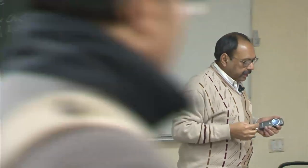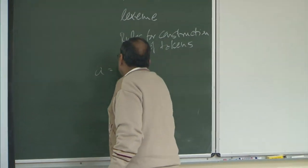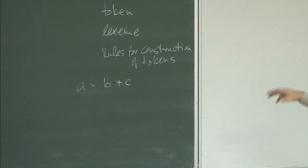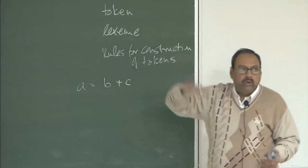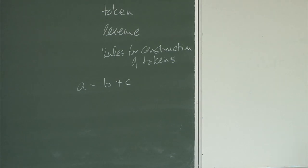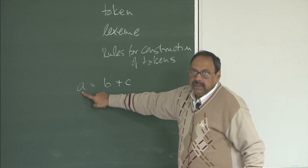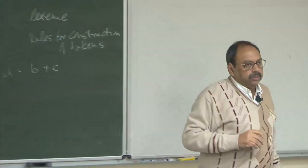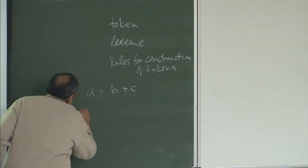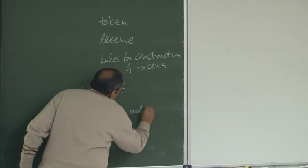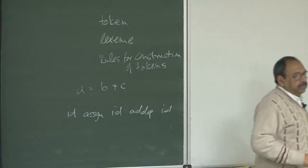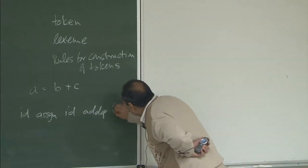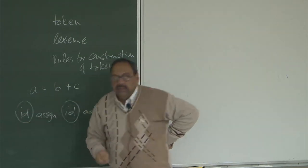Let me introduce these terms by an example. Suppose I write an expression and I am trying to tokenize it — to compile this particular expression. I am just focusing on this one, and typically what I will be doing is passing on information like saying there is an identifier, there is another identifier, there is another identifier, this is an assignment operator, and this is an addition. So my stream of tokens is going to be: ID, assign, ID, add, ID. This is what my input to the syntax analyzer will be. These — ID, assign, add — are really nothing but the tokens.